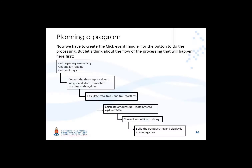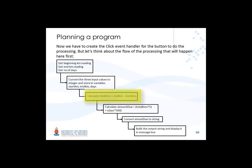We can present the steps of our program in this flow diagram. First we get the beginning and end kilometer readings and the number of days. Then we have to convert these three input values to integers and store them in variables. We use those variables to calculate firstly the total number of kilometers and then the amount due.